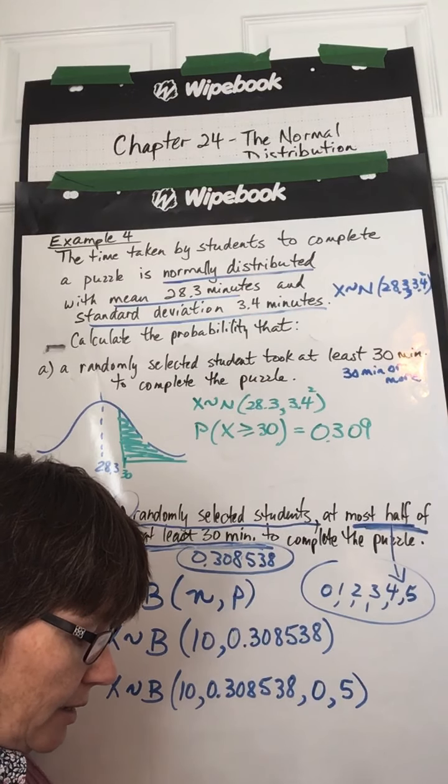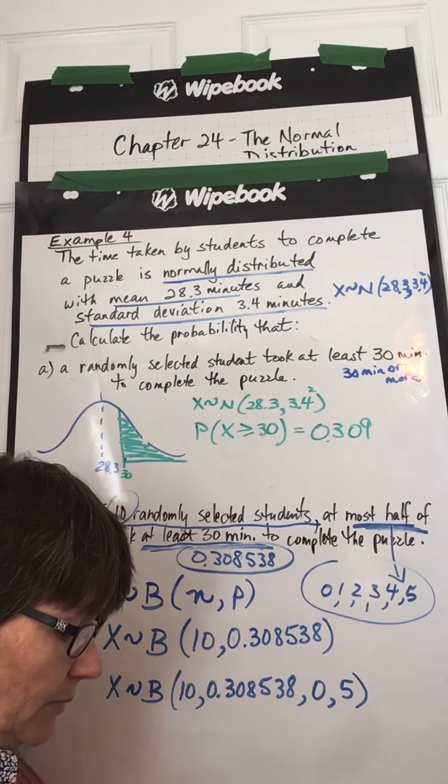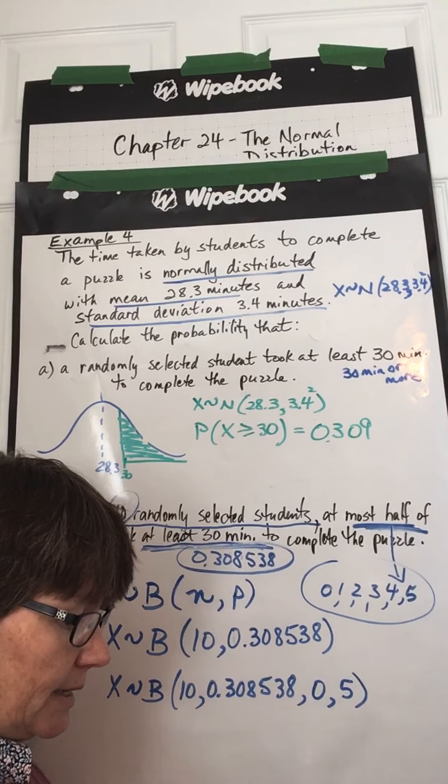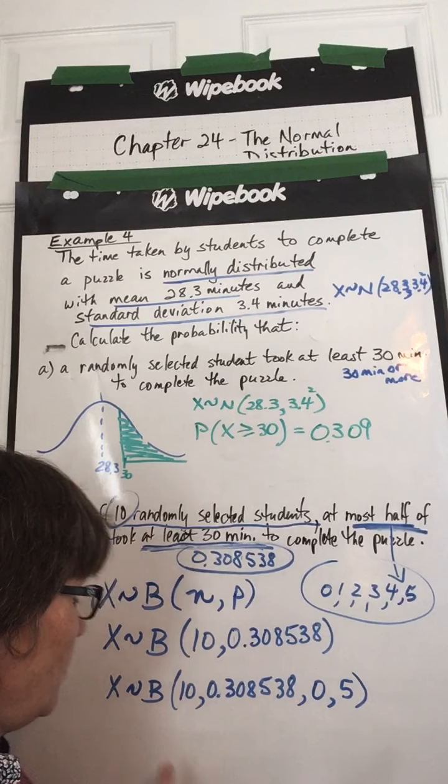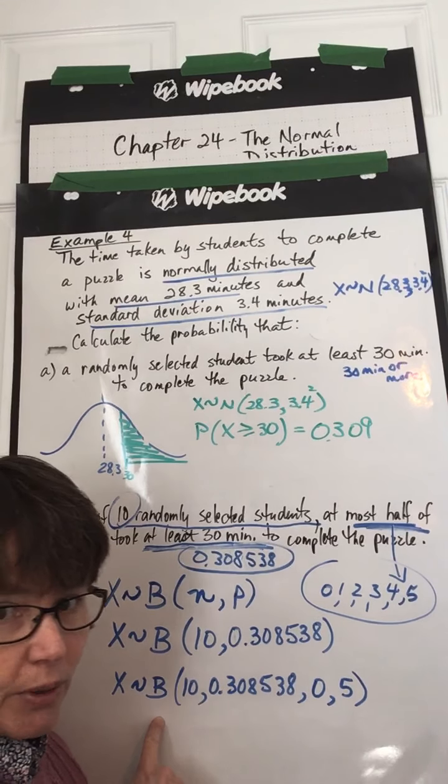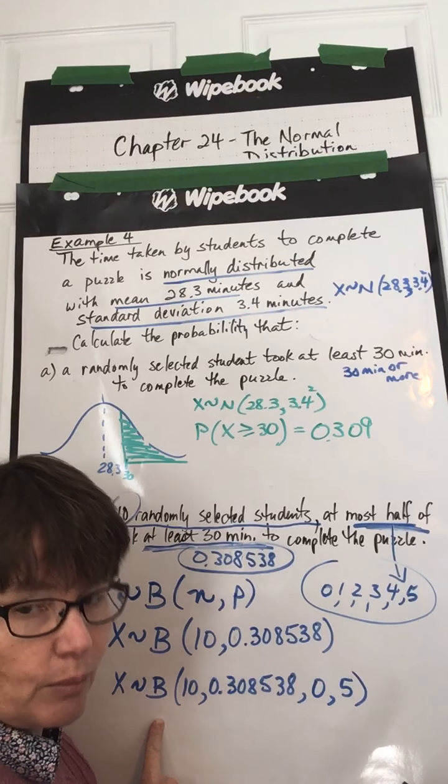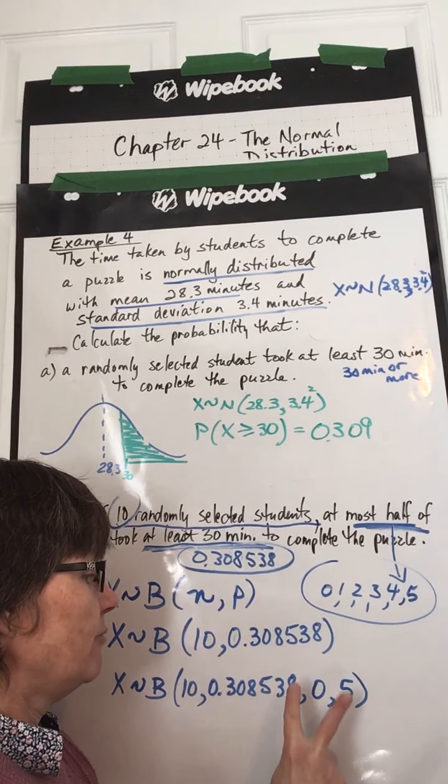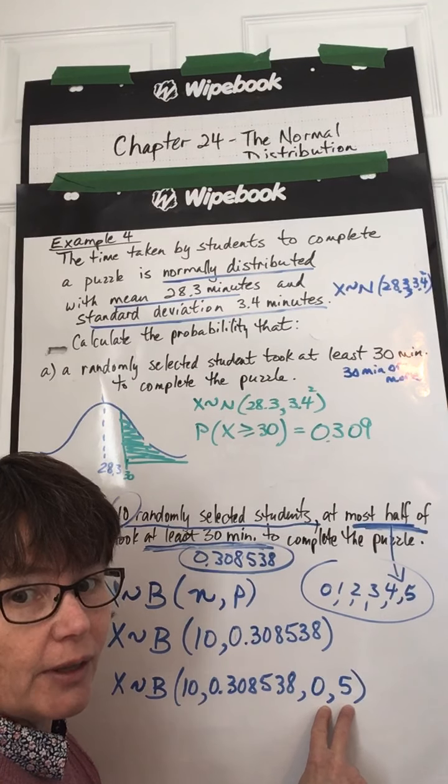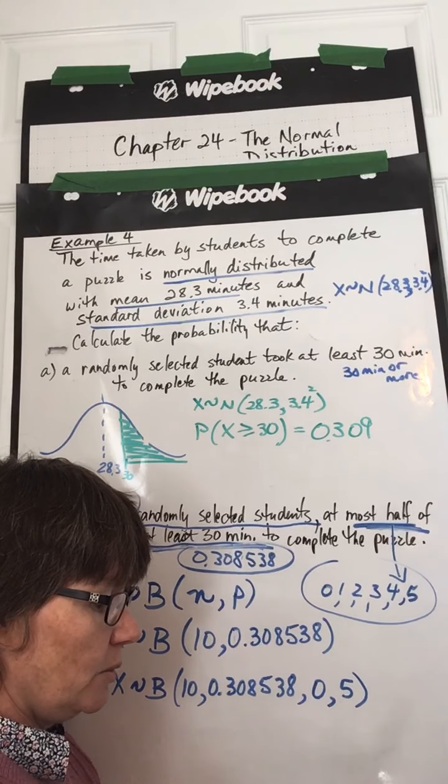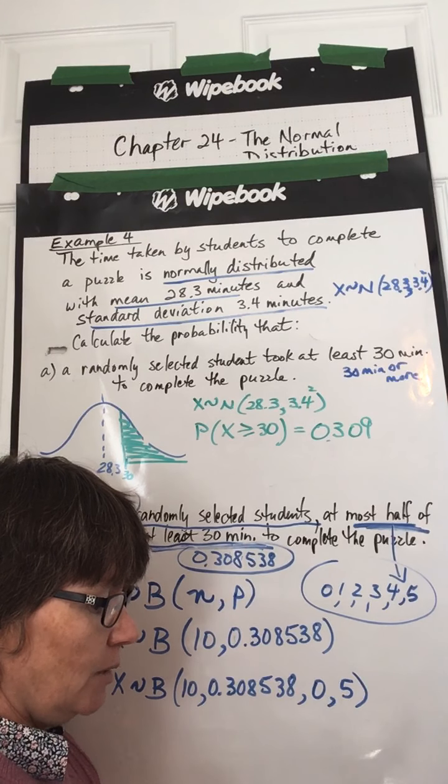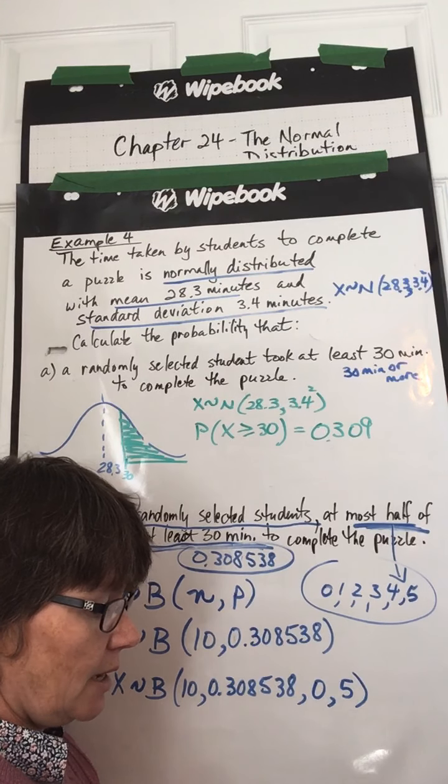So let's take a look at our calculator. We say menu, probability, distributions. Now, when we're distributing binomially, remember, we look for binomial, PDF or CDF. If we have an upper bound, lower bound, an upper bound, then we use CDF. So we go to binomial CDF. We put in the number of trials, 10.